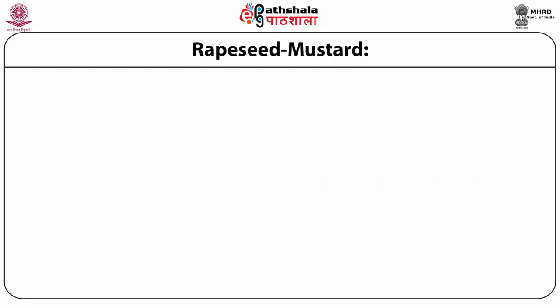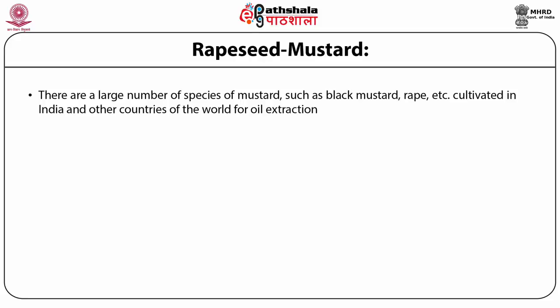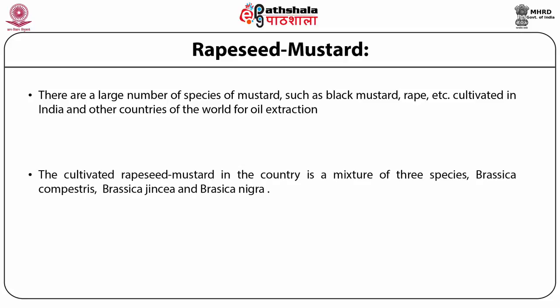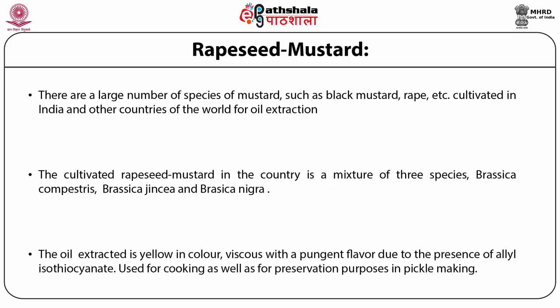Rapeseed and mustard: There are a large number of species of mustard such as black mustard cultivated in India and other countries for oil extraction. The cultivated rapeseed mustard in the country is a mixture of three species — Brassica campestris, Brassica juncea and Brassica nigra. The oil extracted is yellow in color, viscous with a pungent flavor due to the presence of allyl isothiocyanate. This oil is used for cooking as well as for preservation purposes in pickle making.